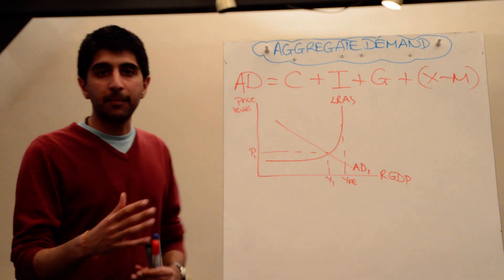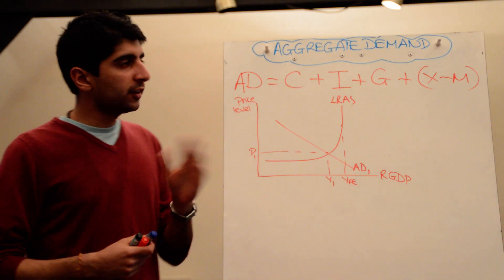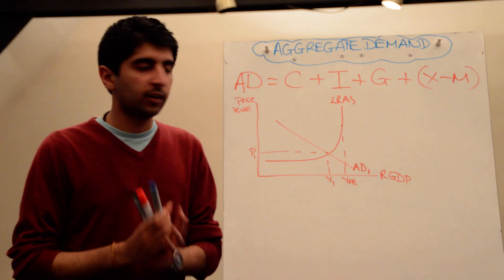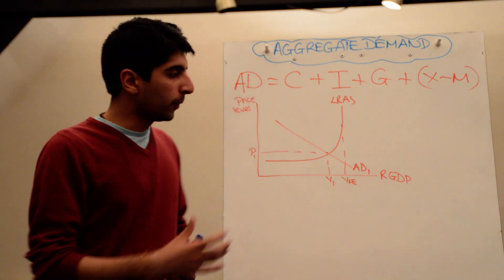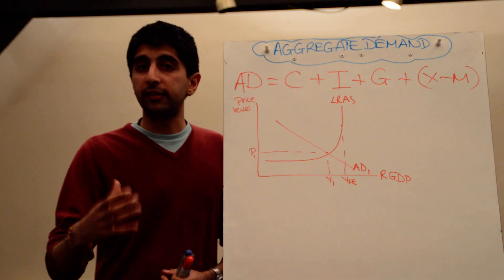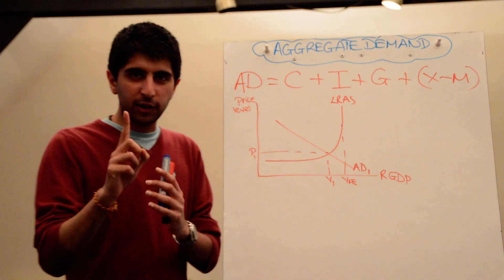Let's have a brief look at aggregate demand, the equation, and when aggregate demand can shift. Aggregate demand is a fundamental concept in economics. Aggregate demand is the code word for actual growth. When there is an increase in aggregate demand, there will be an increase in actual growth. It's a measure of spending in the economy, that's very important.